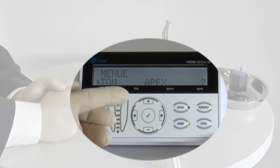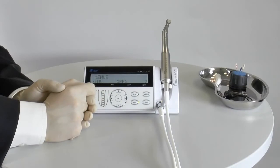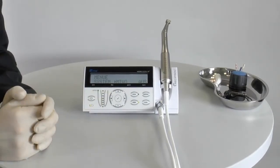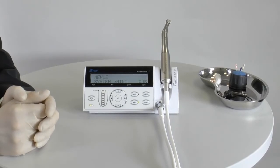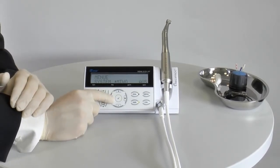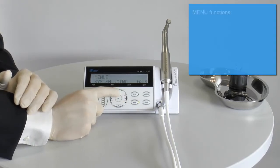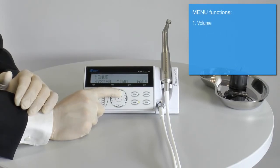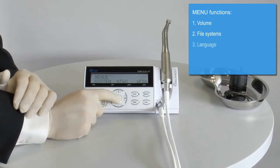You can show and hide file systems according to personal preference. To do this, select system with the help of the plus and minus keys. Use the right arrow key to move to the right and then select the desired file system by using the plus or minus key. Select on or off and then save your changes by pressing the confirm key.